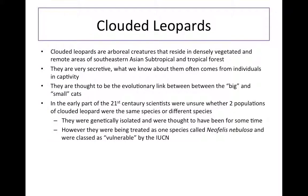Clouded leopards are arboreal creatures that reside in densely vegetated and remote areas of southeastern Asian subtropical and tropical forest. They are very secretive, and what we know about them often comes from individuals in captivity. They are thought to be the evolutionary link between the big and the small cat species, and the clouded leopards are indeed the smallest of the big cats.